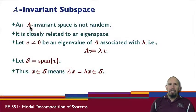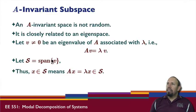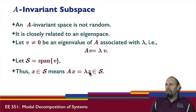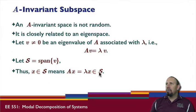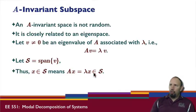An A-invariant subspace is not a random space — it is closely related to an eigenspace. If V is a non-zero eigenvector of A associated with lambda, and S is the span of that vector, then A times X equals lambda times X — a multiple of that vector, which is still in the subspace. So the A-invariance relationship holds true for eigenvectors.